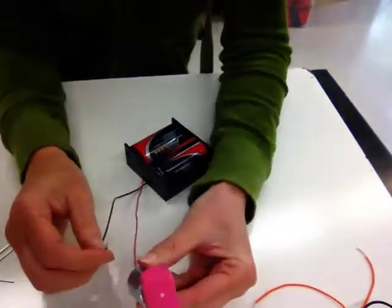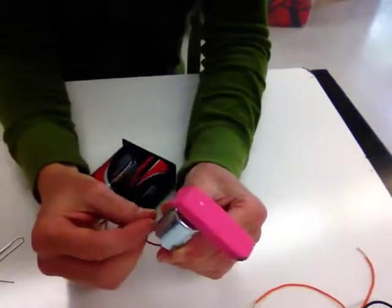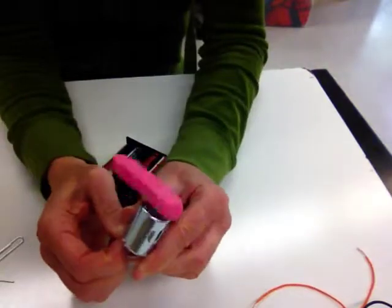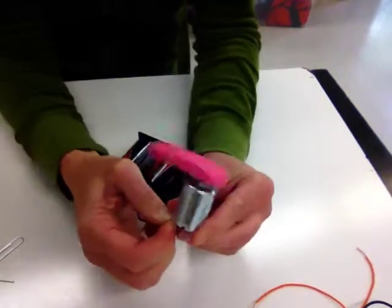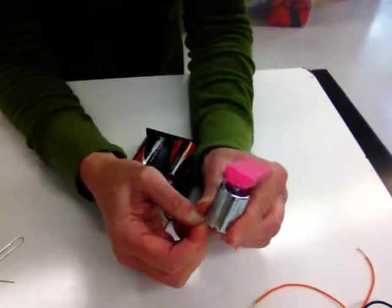And because the eraser is on unevenly, it's going to really wobble. There we go. It wobbles very hard. Enough to make your toys skitter around the table.